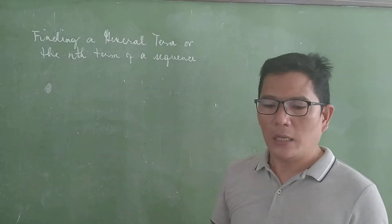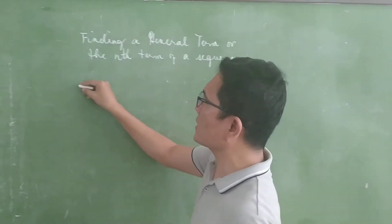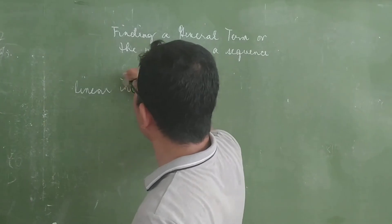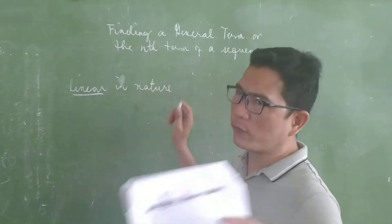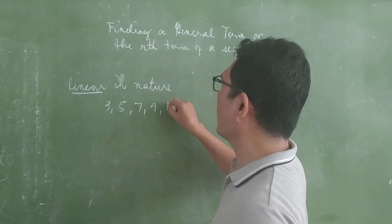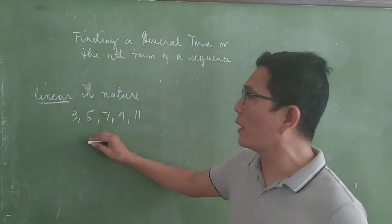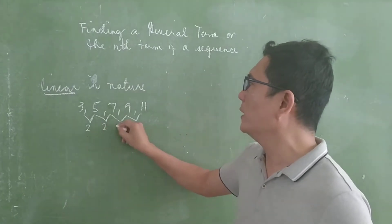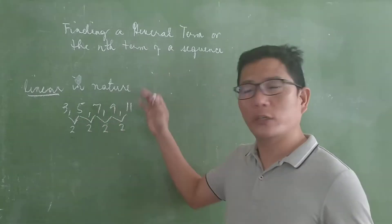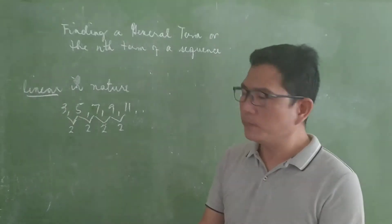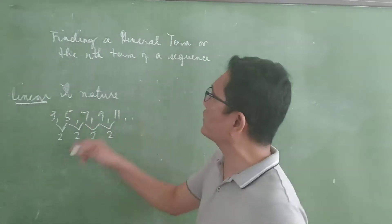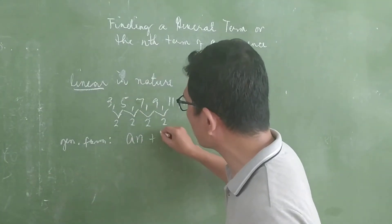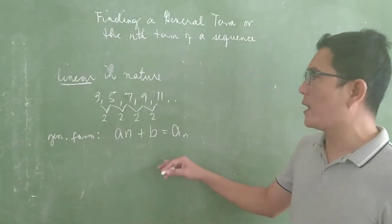Previously, we have learned that for sequences that have a common difference, it is called a sequence that is linear in nature. For example, 3, 5, 7, 9, 11 — this is a sequence which is linear in nature because there is a first common difference, which is 2, since each term is obtained by adding 2. The general form of a sequence which is linear in nature is an + b = a sub n.